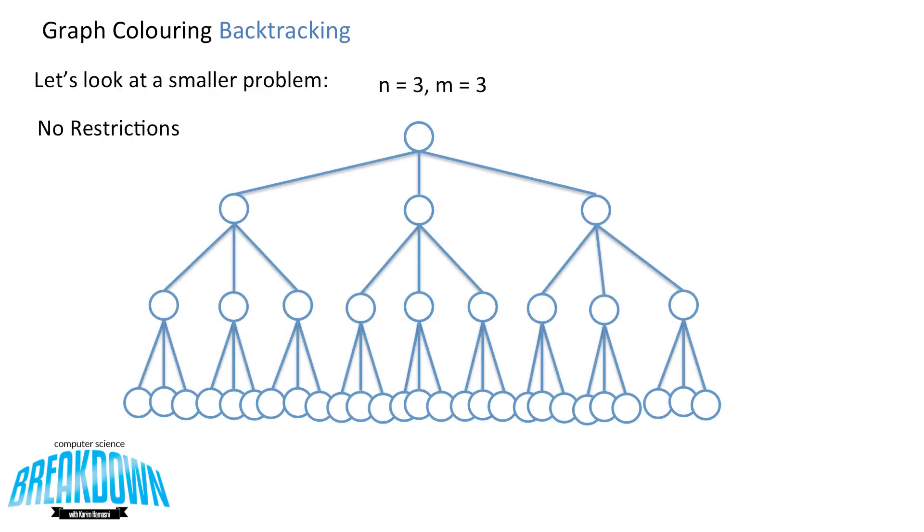Now let's look at a smaller problem with n equal to 3 and m equal to 3 just so we could see how big the search space can get. So if we had no restrictions on building this tree, meaning that we can build branches that have the same colored node with each other, then this is how the tree would be built.